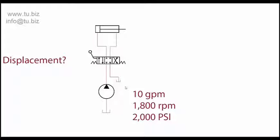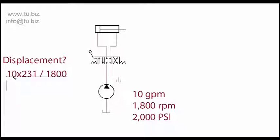So in this case we're going to have 10 GPM times 231, divided by the RPM. The RPM here is 1800, and that will give you the displacement.